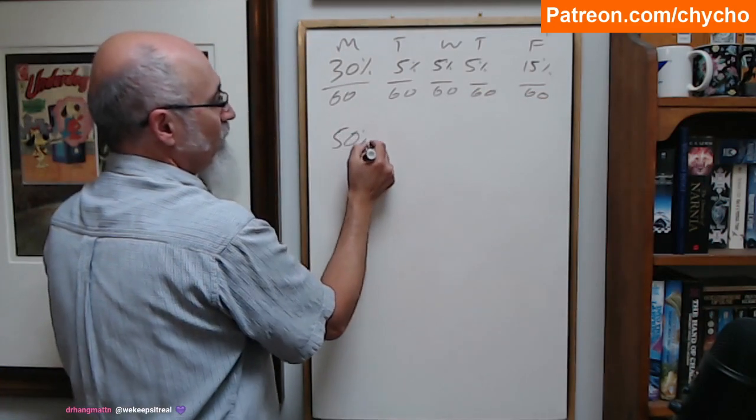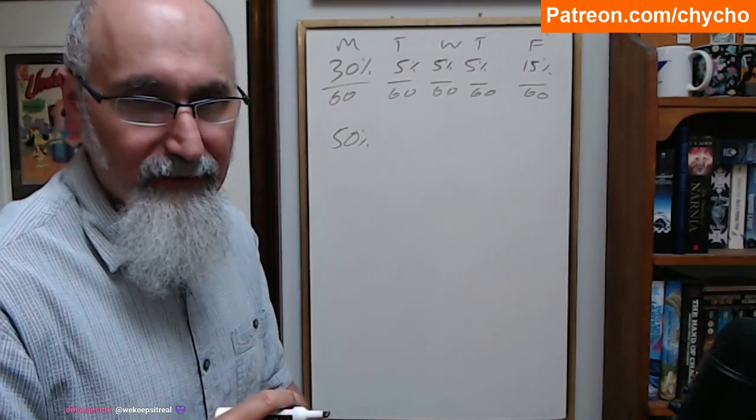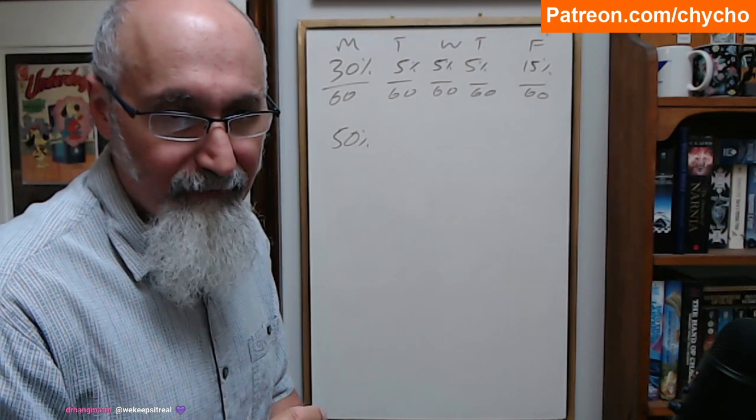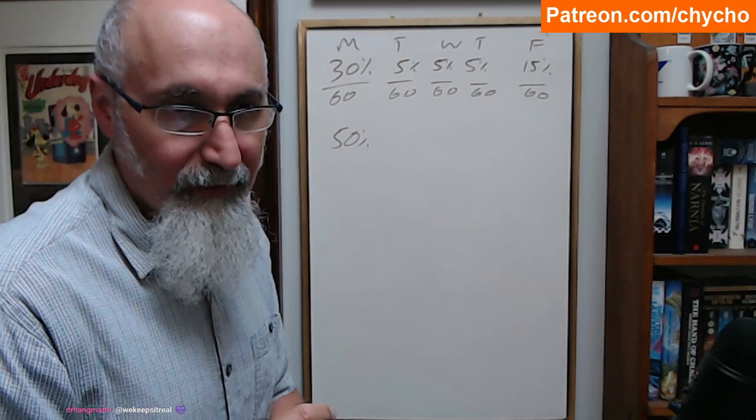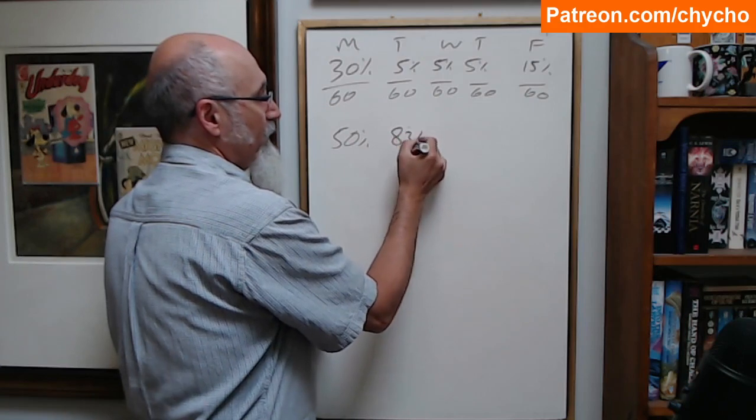So, this is 50% probability here. This is whatever that is. 5 divided by 60. What's the percent there? 5 divided by 60 is 0.0.